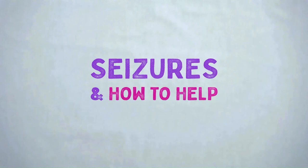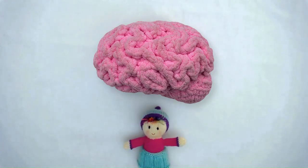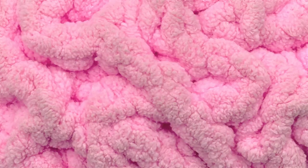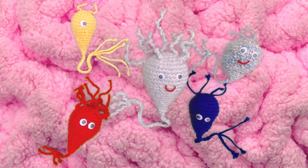Seizures and how to help, part one. This is a brain. We've all got one inside our head. Your brain is a bit like the boss of your body. If you were to look at a brain really closely, you'd see that it contains lots and lots of neurons, which is a type of cell that loves to send electrical messages.